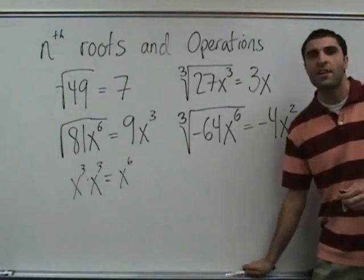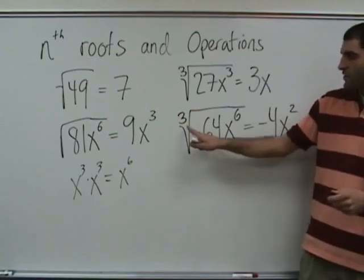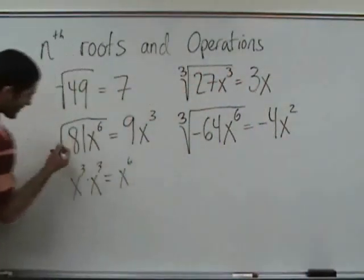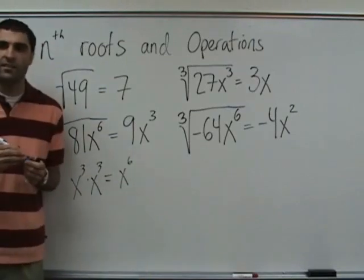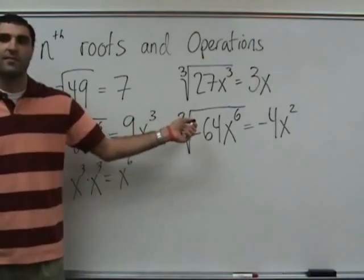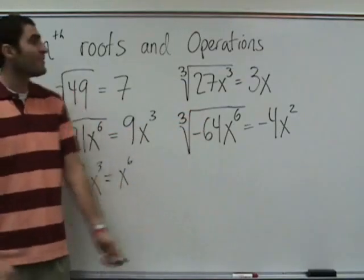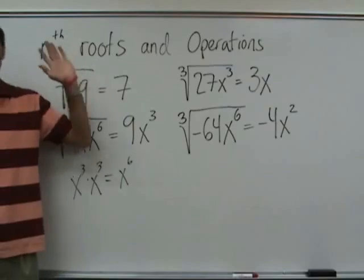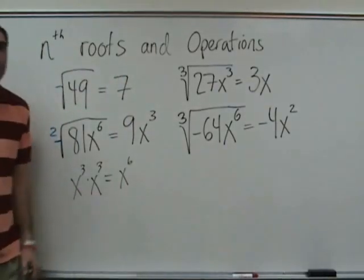Here's something you never knew your whole life — it was hiding. There was actually a 2 there in square root hiding all along. Square root, cube root — what's after cube root? Fourth root. And then n — it could be anything you want, n being a number.